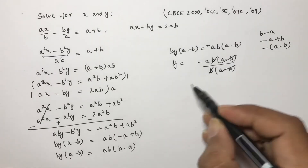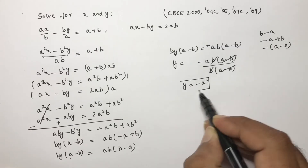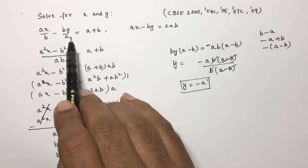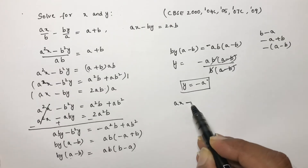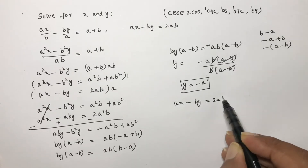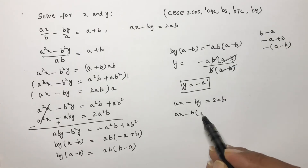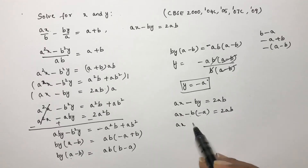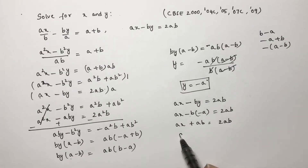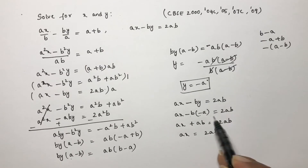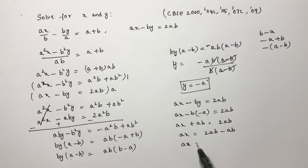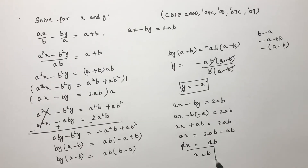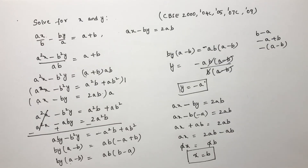The value of y is minus a. Substituting y equals minus a into the equation ax minus by equals 2ab: ax minus b times (minus a) equals 2ab, so ax plus ab equals 2ab, giving ax equals ab. Cancelling a, we get x equals b. So x equals b and y equals minus a.